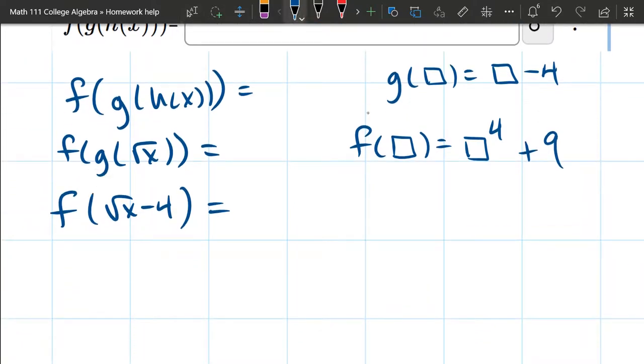All right, so that will be square root x minus 4. That's in the box to the 4th power plus 9.